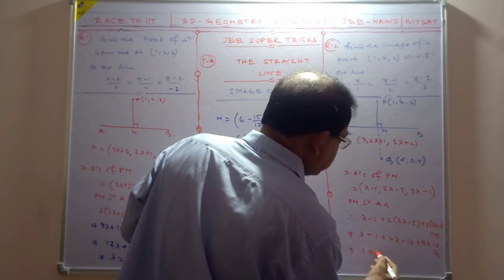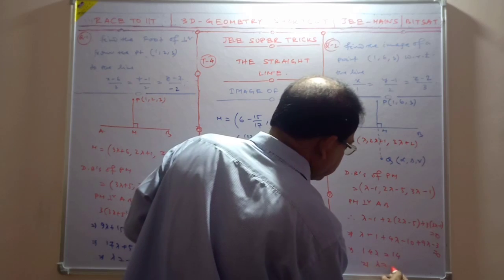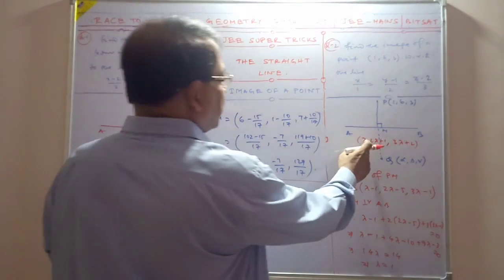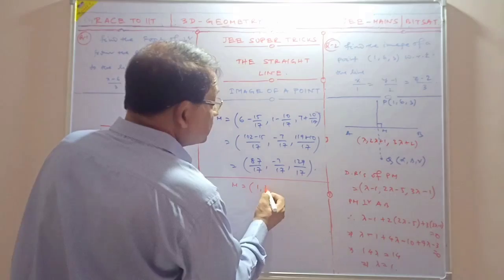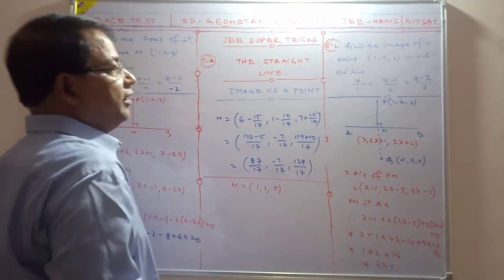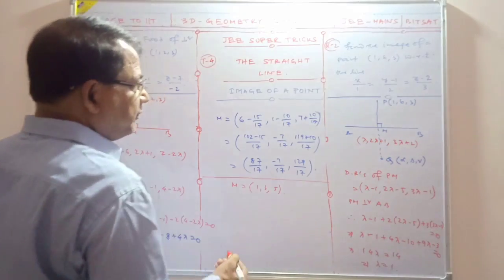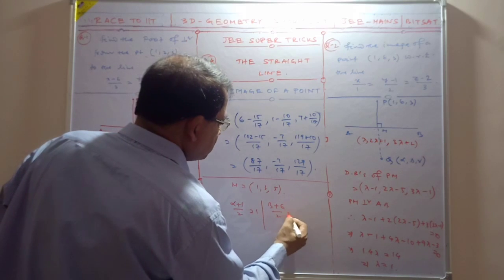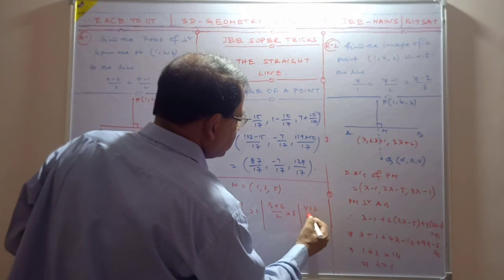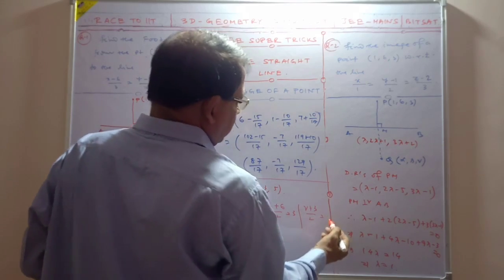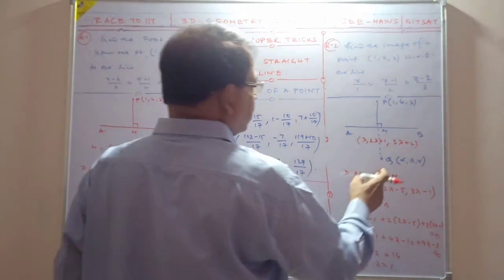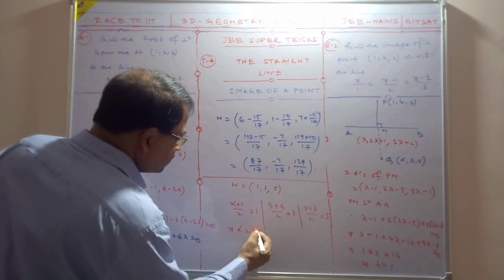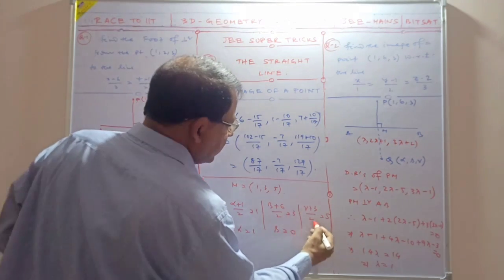So this is 14 lambda equals 14, so lambda value is 1. When lambda is 1, M point coordinate is 1, 3, and 5. So alpha plus 1 by 2 equals 1, beta plus 6 by 2 equals 3, and gamma plus 3 by 2 equals 5.